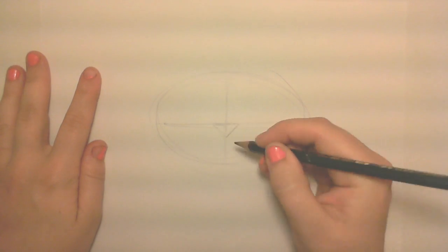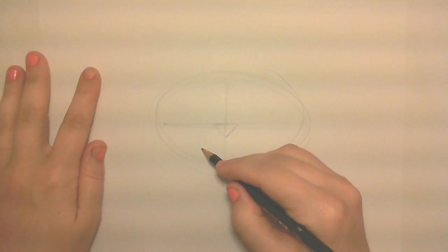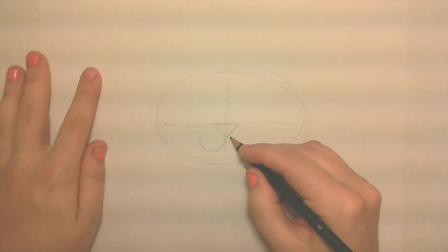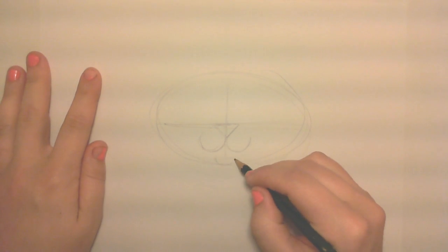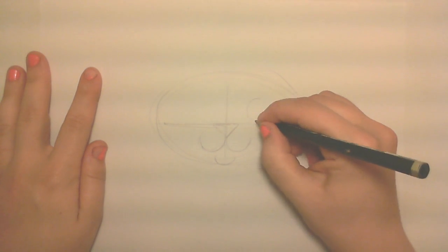Next, draw your nose, which is just an upside down triangle. And you'll see it lines up with both the vertical and the horizontal line. Next, just three semicircles for the mouth and chin.